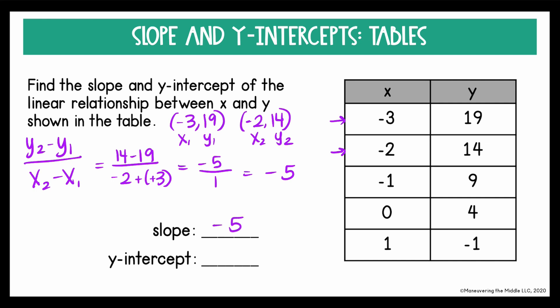Now remember for y-intercepts, since we don't have a graph to look at, what we're looking for is the value of y whenever x equals zero. So you can see in the table x is zero and y is equal to four. So we know our y-intercept is four.